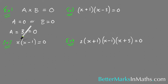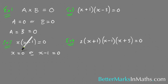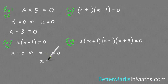Looking at example 2: x(x minus 1) equals 0, so x times x minus 1 equals 0. Using the null factor law, x equals 0 or x minus 1 equals 0. The first gives x equals 0 directly. For the second, adding 1 to both sides gives x equals 1.